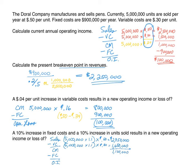We can use the shortcut: 5 million units times 1.1, times the contribution margin per unit of 20 cents, gives contribution margin of $1,100,000. Fixed costs also increase by 10%: $900,000 times 1.1 equals $990,000. Subtracting gives a new operating income of $110,000.